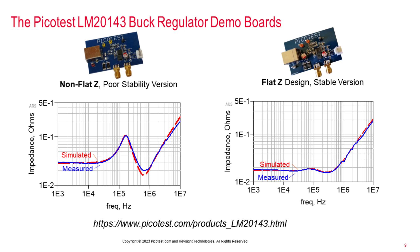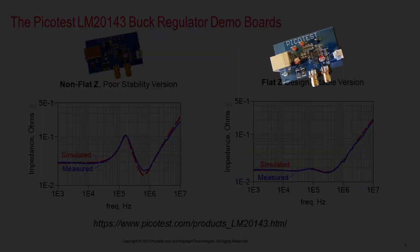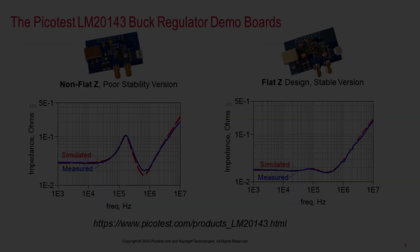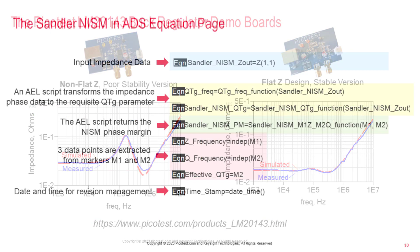The impedance data required for NISM stability assessment can be obtained from either measurement or simulation. For this video's example ADS workspace, we're going to use the Picotest LM20143 regulator demo board set. This demo board is readily available and provides access for both traditional Bode plot gain-phase data and also for the Sandler non-invasive stability margin impedance data. These boards are simple to use, requiring only a USB cable for input power. Even the load resistors are included on the board, and we know the right answer, so if you try this NISM measurement yourself, you'll know right away if you got it right.